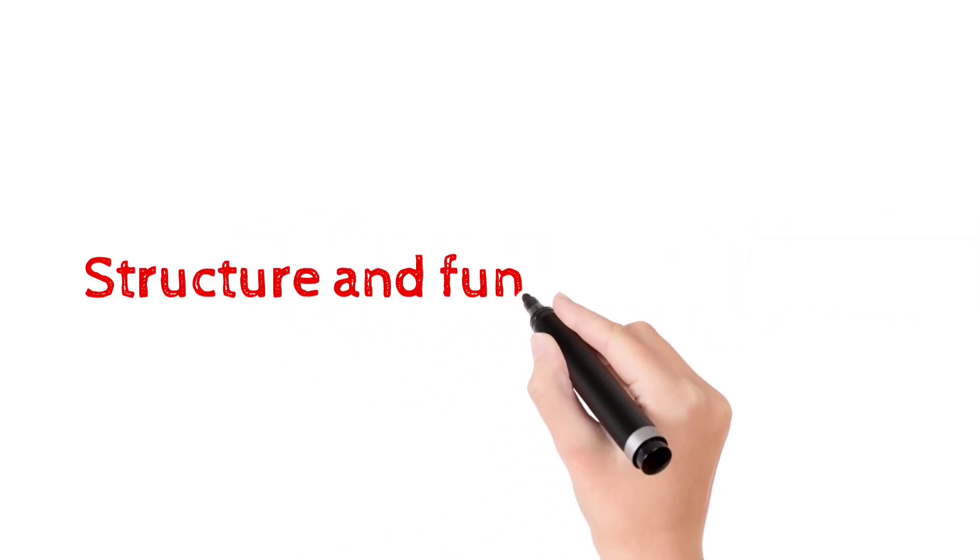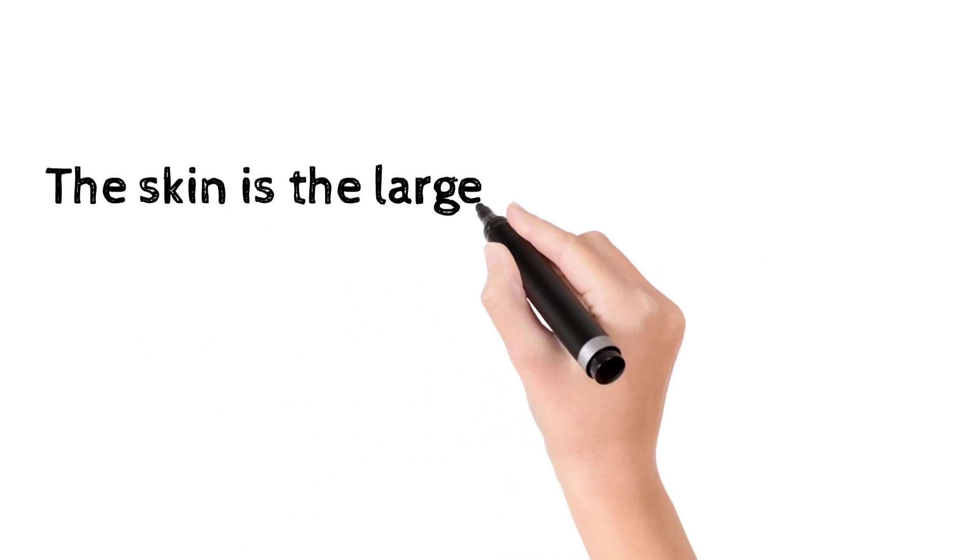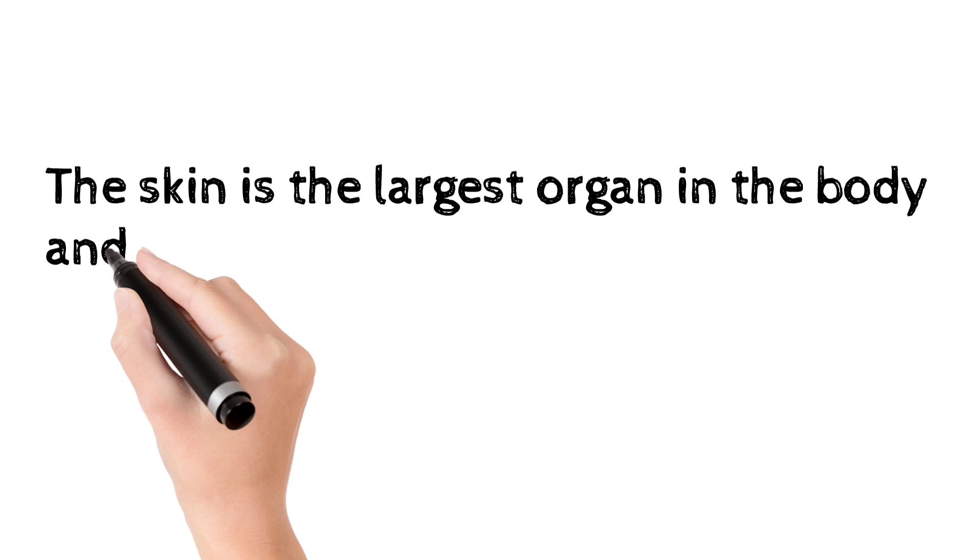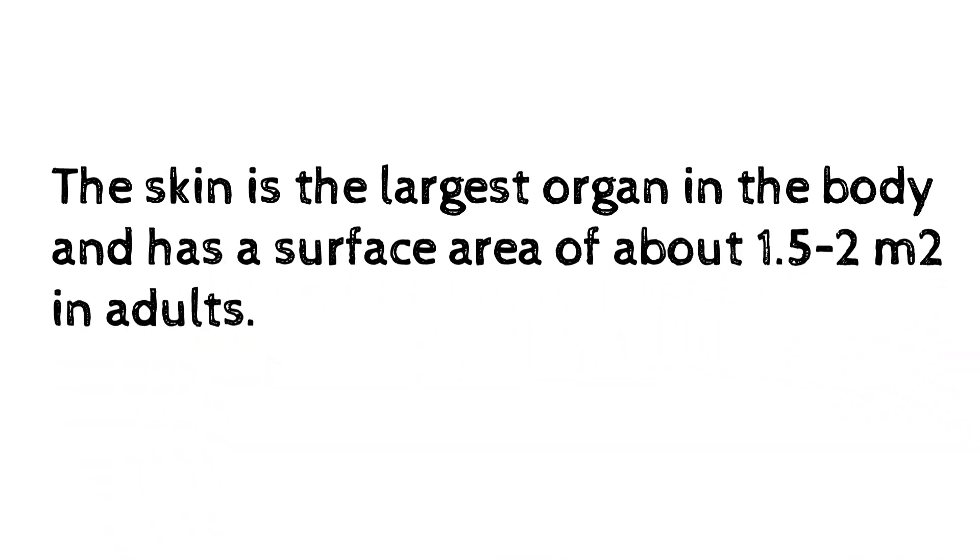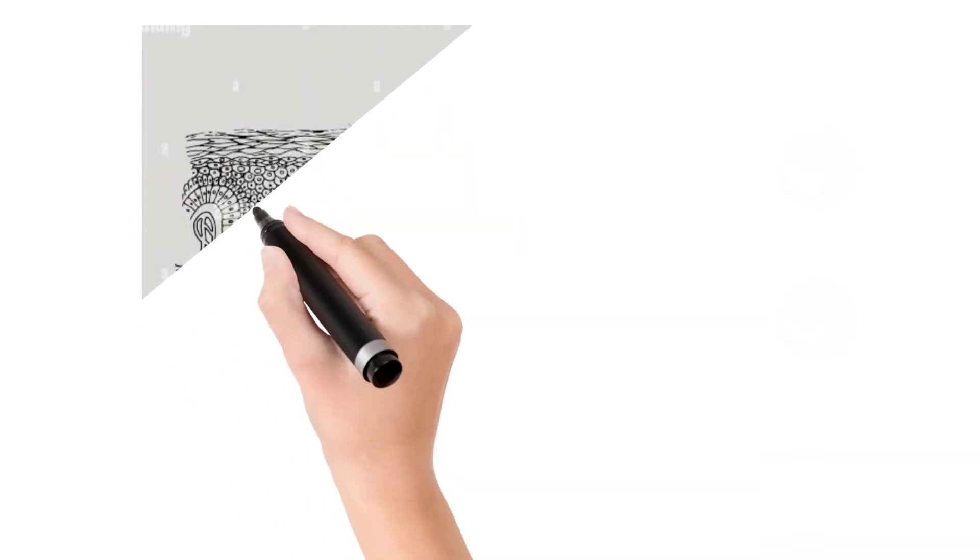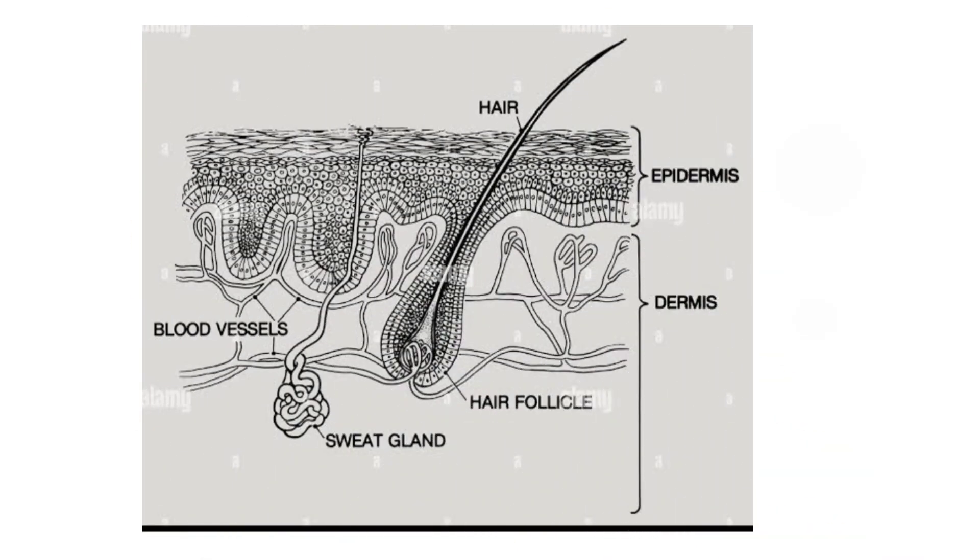Structure and functions of the skin. Skin is the largest organ in the body and has surface area of about 1.5 to 2 meter square in adults. Skin has two main layers: epidermis and dermis.